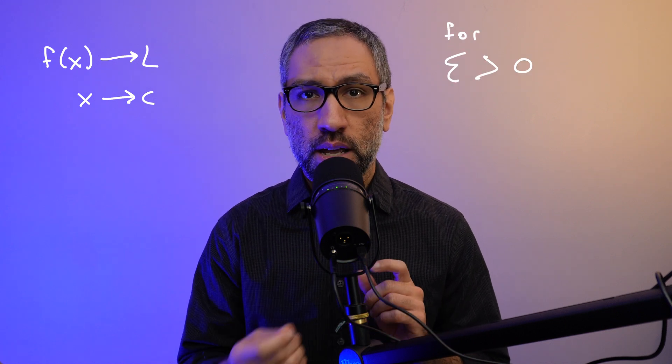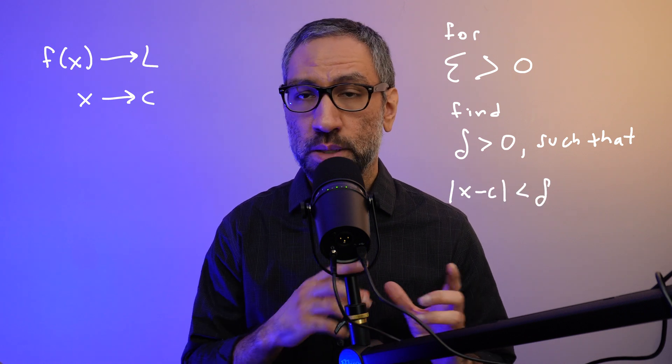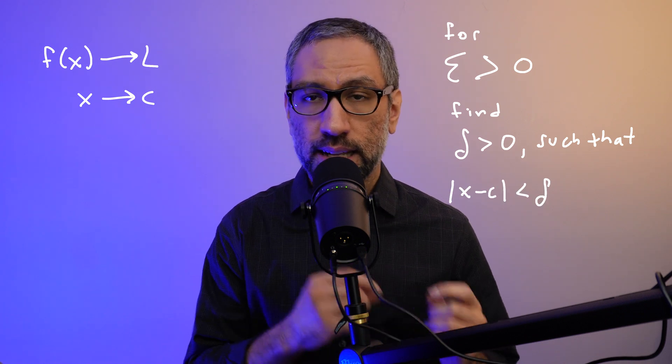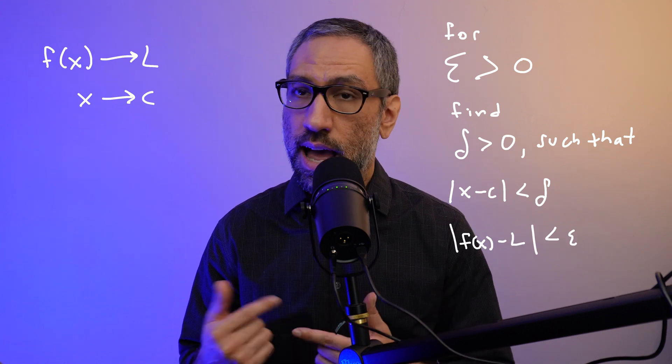Let's unpack this definition a bit. The key idea here is that we want to make sure that the function f(x) gets arbitrarily close to L as x gets arbitrarily close to c. To do this, we pick any positive number epsilon that we want, and then we find a positive number delta that makes sure the distance between x and c is less than delta, which in turn makes sure that the distance between f(x) and L is less than epsilon. In other words, we want to show that no matter how close we want to get to L, we can always get close enough by picking the right value of delta.